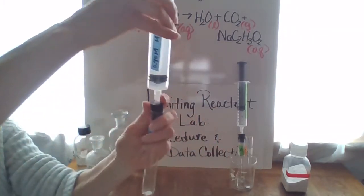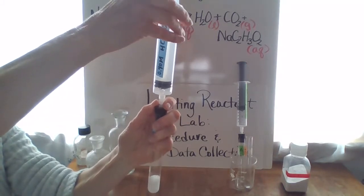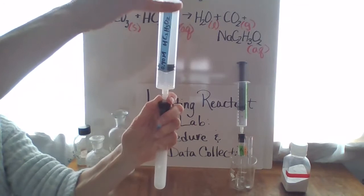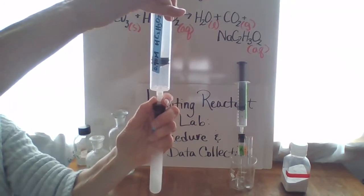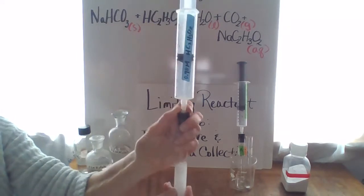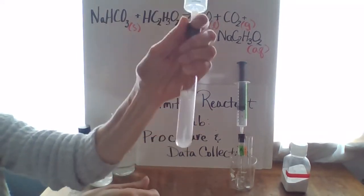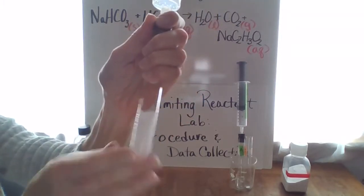This is the 0.40 molar acetic acid. I'm putting some of the acetic acid in slowly until all of it has been put into the reaction vessel. We can see some bubbling for sure.